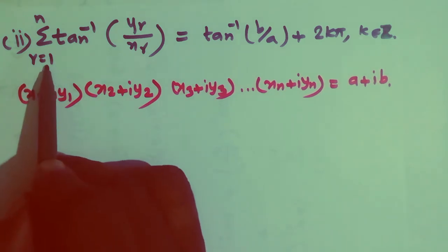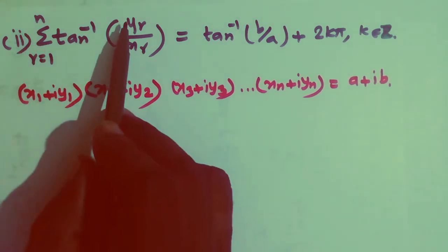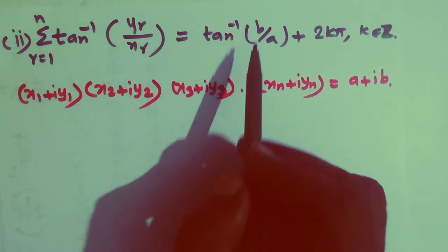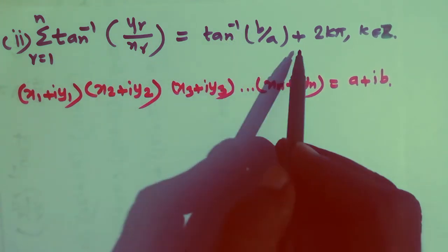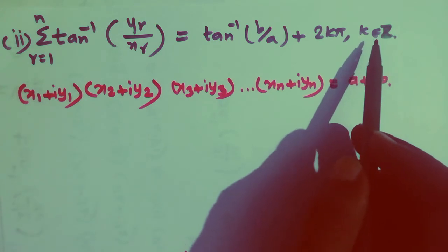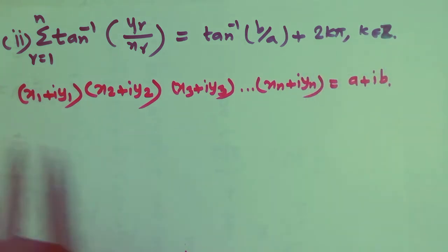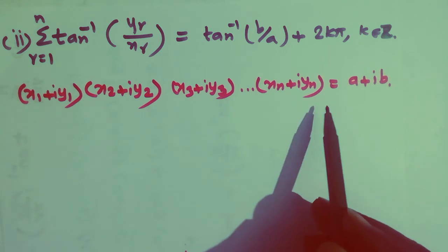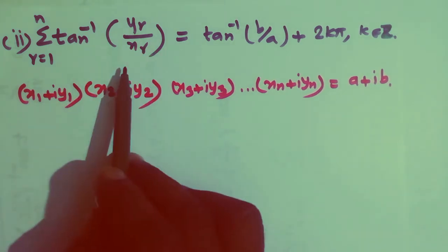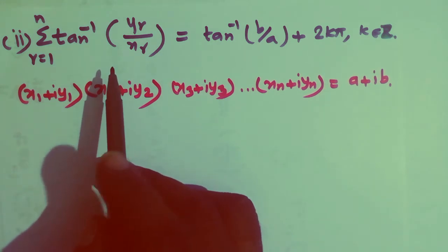Subdivision 2: Summation r = 1 to n of tan⁻¹(yr/xr) equals tan⁻¹(b/a) + 2kπ, where k belongs to Z. The sum from r = 1 to n equals tan⁻¹(b/a) + 2kπ, because tan inverse gives the argument.